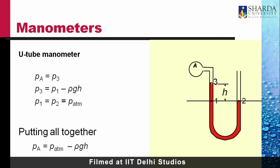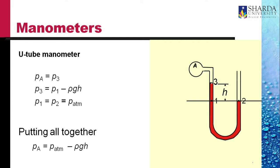Since the density of the gas is very small, we can say P_A is like P_3, and P_3 is P_1 minus ρgh, because from P_1 we are going up a distance H. So it is minus ρgh, and P_1 equals P_2 equals atmospheric pressure. Putting it all together, P_A equals P_atmosphere minus ρgh. The pressure of the gas inside the bulb is lower than atmospheric pressure by an amount ρgh, where ρ is the density of the manometric fluid in the tubes.